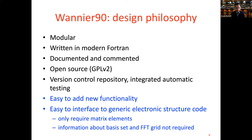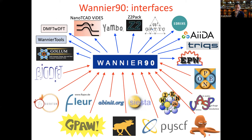The benefit of that is that as developments are made in Wannier90, they're very easily accessible to everyone in the community who uses any type of electronic structure code. These days Wannier90 interfaces to quite a large number of electronic structure codes, which probably covers a large fraction of the user base in computational materials modeling. The electronic structure codes include BigDFT, Quantum ESPRESSO, FLEUR, EPOR, ABINIT, ELK, SIESTA, PySCF, Wien2k, VASP, Octopus, and OpenMX — they all have interfaces to Wannier90.